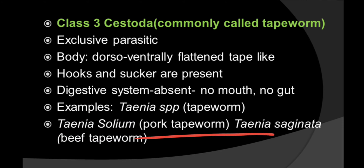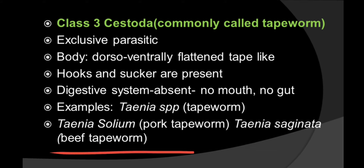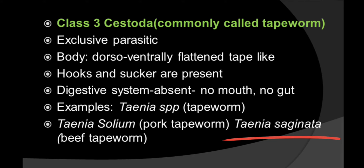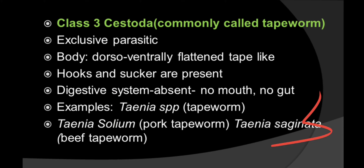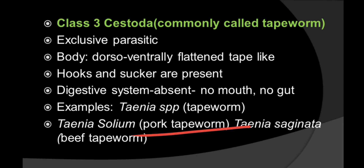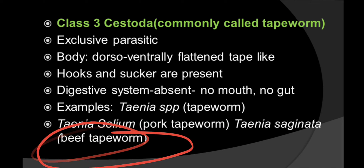Examples are Taenia. Taenia solium is known as the pork tapeworm, whereas Taenia saginata is the beef tapeworm. Taenia solium has two hosts: human and the pig. Taenia saginata also has two hosts: human and cattle or buffalo. This tapeworm generally affects those people who eat beef, since it is found in cattle and buffalo.